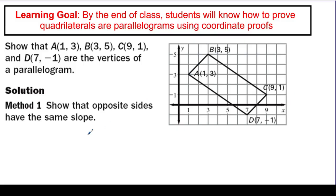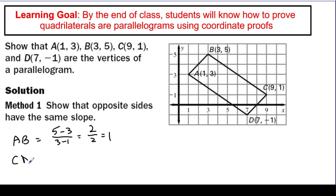I'm going to find the slope of AB. From A to B, the slope is Y2 minus Y1 over X2 minus X1: 5 minus 3 over 3 minus 1, which is 2 over 2, which is 1. Then for its opposite side CD, that would be negative 1 minus 1 over 7 minus 9, which is negative 2 over negative 2 — the same slope of 1. So AB and CD are opposite sides with the same slope, meaning they are parallel to each other.